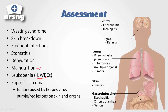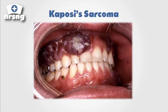Kaposi's sarcoma is a tumor caused by the herpes virus. It's a purple-red lesion on skin and organs. If you ever get a question asking about Kaposi's sarcoma, you need to be navigating towards an answer that involves AIDS. You can see this purplish lesion on the patient's gums, and it can appear on skin and organs throughout the patient's body — not just isolated to the mouth.